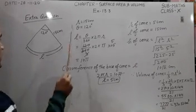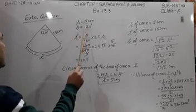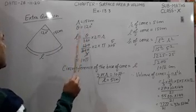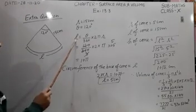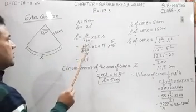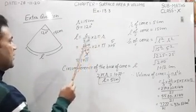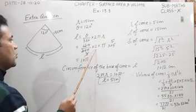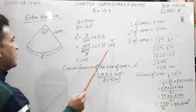The radius of the sector is 15 centimeters and the angle is 120 degrees. So the arc length L of the sector is θ/360 × 2πr. That's 120/360 × 2π × 15.